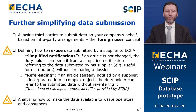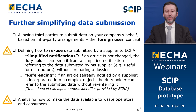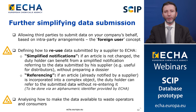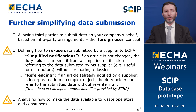We are now working on approaches to further simplify the data submission and to support industry in facilitating their work. The SCIP prototype already allows third parties to submit data on your company's behalf based on inter-party arrangements. For example, you can include foreign users who could have access to your legal entity or company account in order to submit SCIP notifications. This is very useful for companies within a group where a mother company could submit SCIP notifications on behalf of daughter companies.